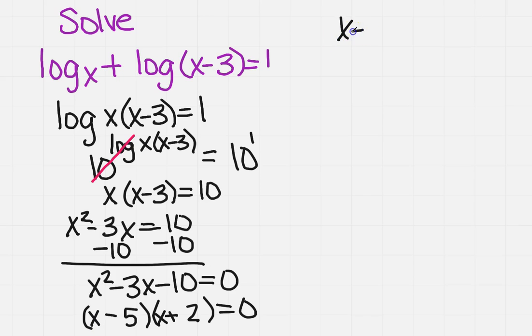So as with other ones, we're going to set each one equal to 0 and solve. So I'm going to get x equals 5 and I'm going to get x equals negative 2.